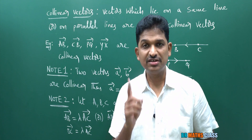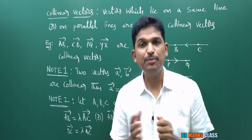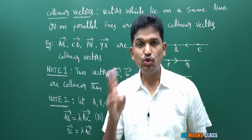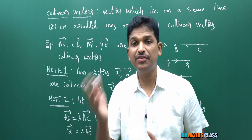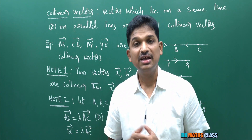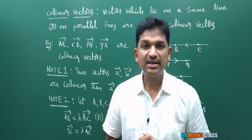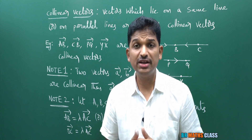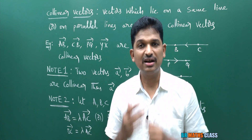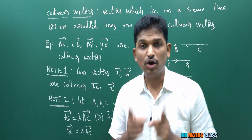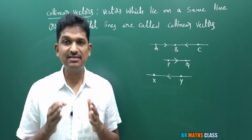What you learned about collinear vectors: first point, collinear vectors are also known as parallel vectors. Vectors which lie on a same line or on parallel lines are called collinear vectors. Two important note points: if two vectors are collinear, then one vector can be expressed as scalar multiplication of another vector — A bar equals lambda times B bar, or B bar equals lambda times A bar. Second note point: if you want to prove that three points are collinear, prove any one of AB bar equals lambda times AC bar, or AB bar equals lambda times BC bar, or AC bar equals lambda times BC bar — one vector is a scalar multiplication of another — then those three points are collinear.